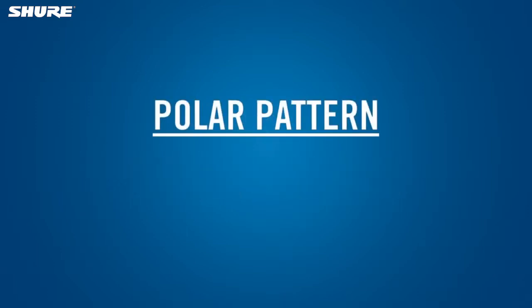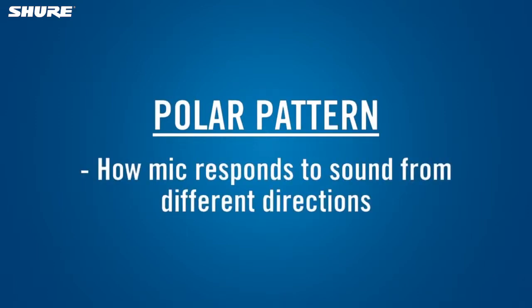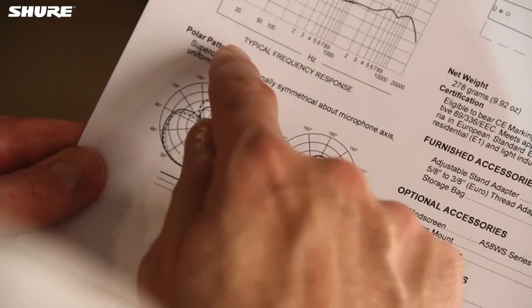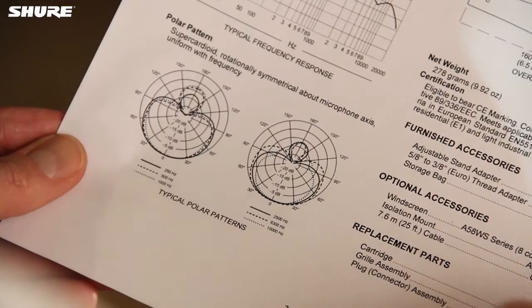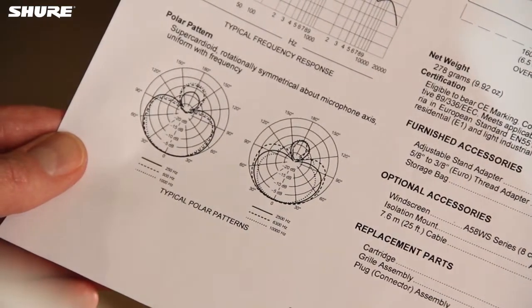polar pattern. A microphone's polar pattern defines how it responds to sounds coming from different directions. The polar pattern tells you how the mic should be placed to maximize pickup of the desired sound source while minimizing feedback or pickup of background noise.